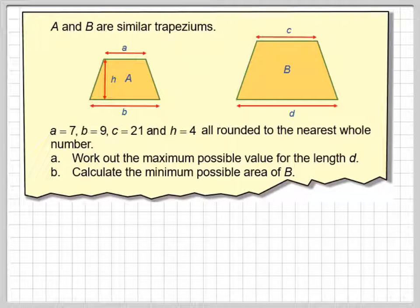A and B are similar trapeziums. We've got a equals 7, b equals 9, and c equals 21, and h equals 4.